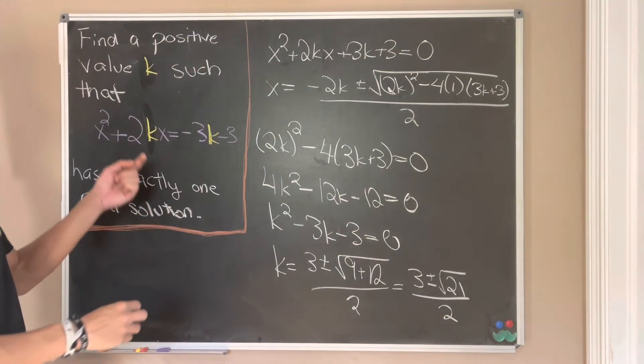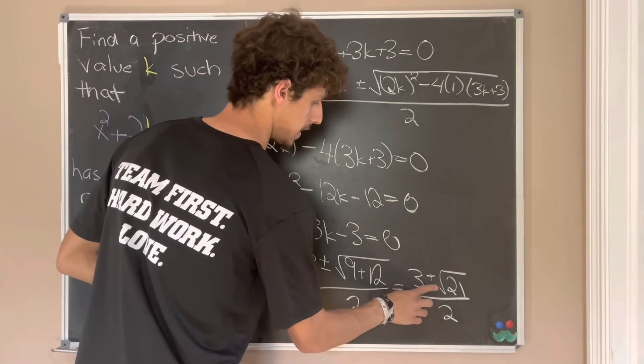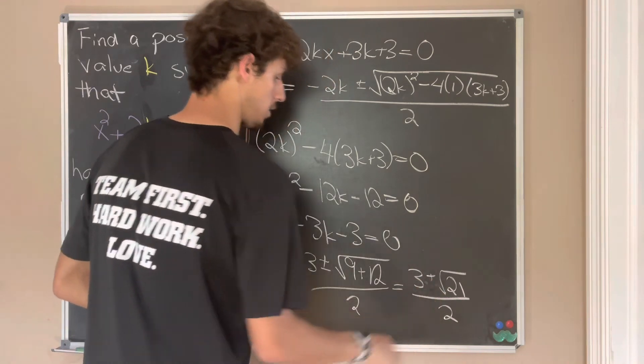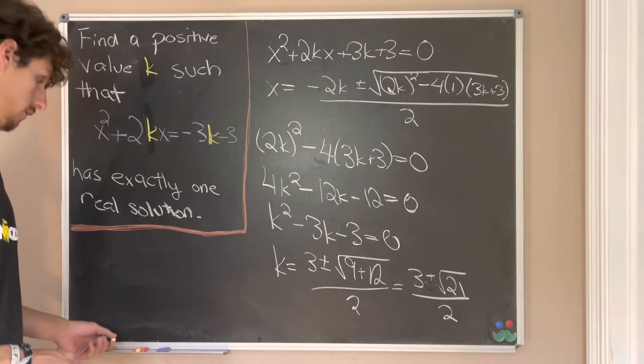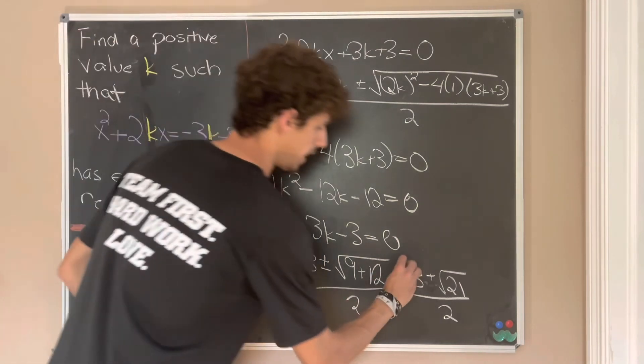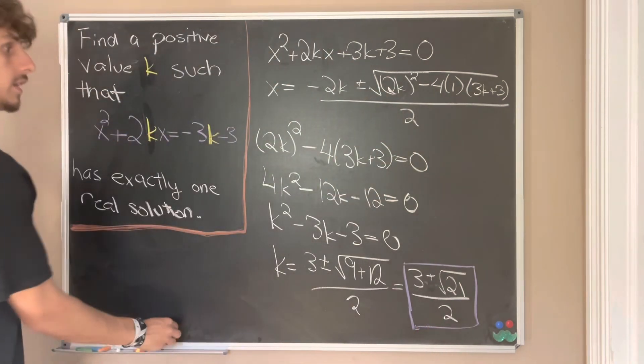And because we're only looking at positive k's here, we can get rid of this minus sign and we'll only look at 3 plus the square root of 21 over 2, because 3 minus the square root of 21 over 2 would be negative. So this is our final solution for k that gives us only one solution.